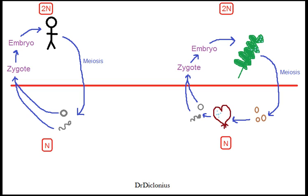On the gametophyte, there are also gametangia, which is where the gametes are derived from. The main important things to take away are: one, there are two multicellular bodies; two, the sporophyte creates spores and the gametophyte creates gametes. Also, the sporophyte creates spores through meiosis, and the rest of the plant life cycle occurs through mitosis.